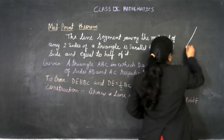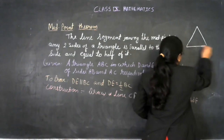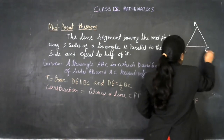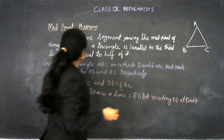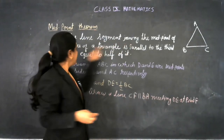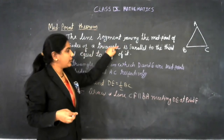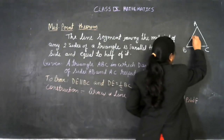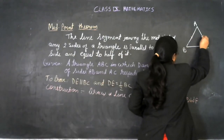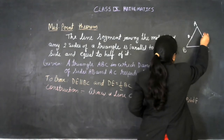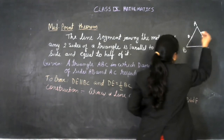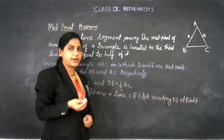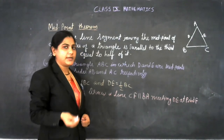Suppose we have triangle ABC. If we take the midpoints of sides AB and AC, then D and E are the midpoints of sides AB and AC respectively.